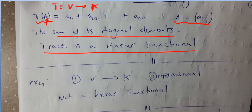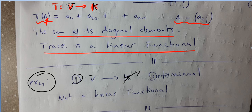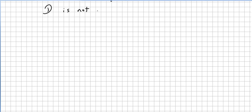The trace takes a matrix from the vector space to the field, so we've confirmed the trace is a linear functional. Next, as an exercise, we consider the determinant — a mapping from the vector space of matrices to the field. When you take the determinant you do get a scalar value in the field, but we are going to show that the determinant is not a linear functional.